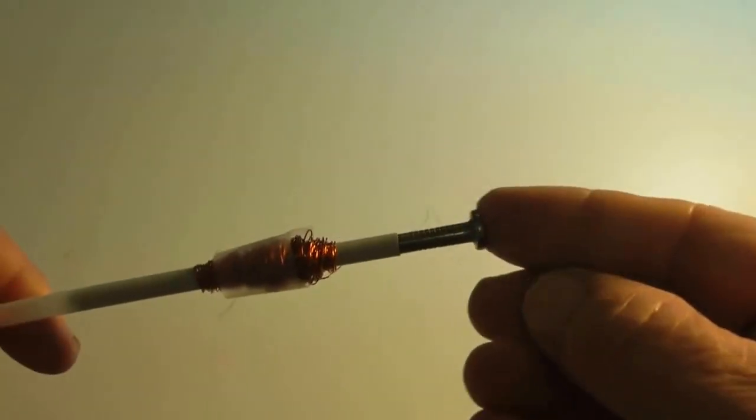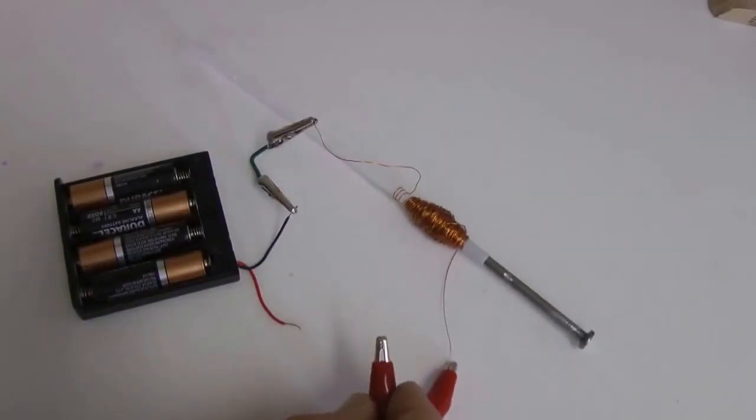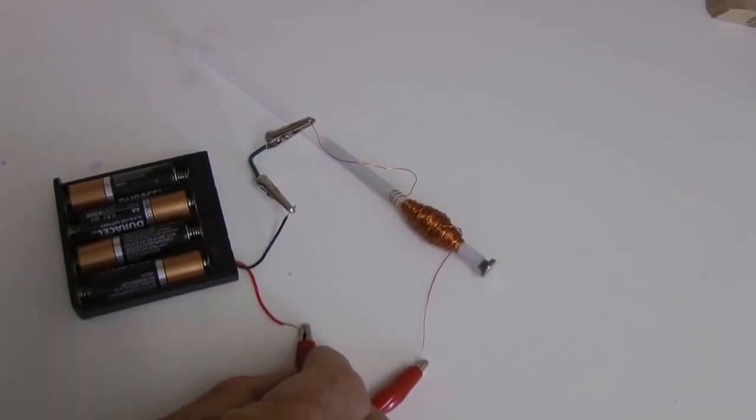This 4-inch iron nail fits perfectly into the coil end of the straw. Connecting the two leads to a battery, we witness the magnetic field moving the iron nail.